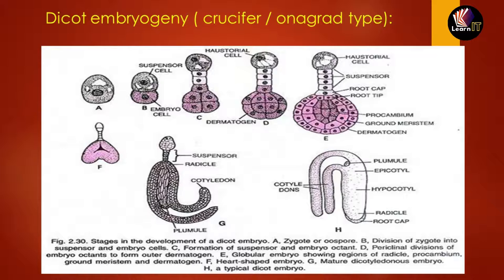Embryogeny has been divided into two categories: one is known as dicot and the other is known as monocot. Let us understand dicot embryogeny in detail, with a diagram marked from A to H representing the steps taking place as the embryo develops from a single cellular structure into a fully developed embryo.